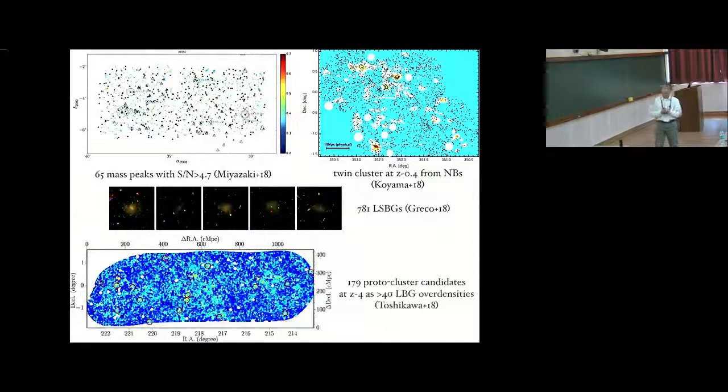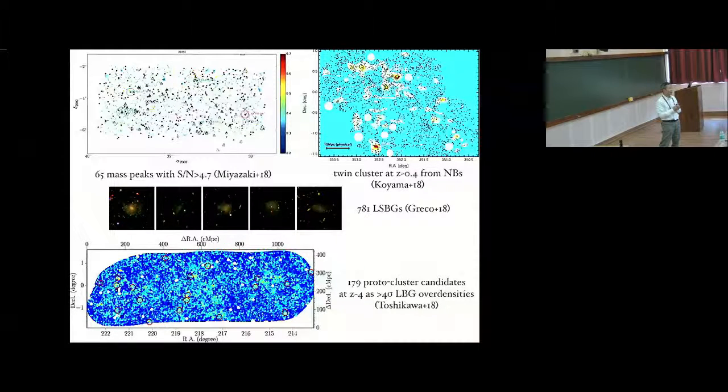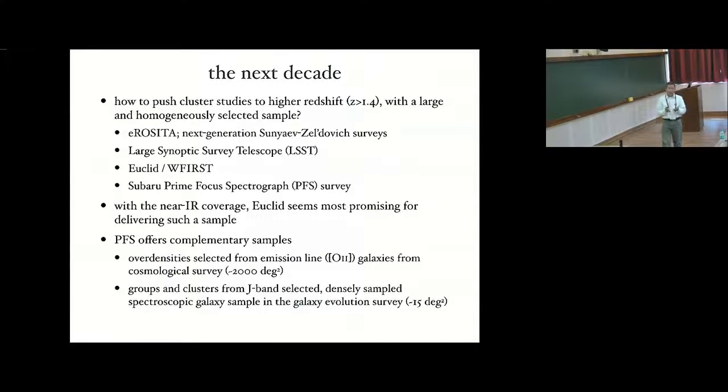So that's basically what I want to say about the cluster studies from HSC today. But obviously the data set is very rich, and that will allow us to study many different other aspects. I will just mention two possibilities. The first one is this study by Miyazaki et al., where they have presented, to my knowledge, the largest shear selected cluster sample to date, with 65 shear mass peaks over a large area of the sky. And we also have about 180 protocluster candidates at redshift 4 selected as Lyman-break galaxy over-densities. So this will allow us to study the cluster evolution in an unprecedented way.